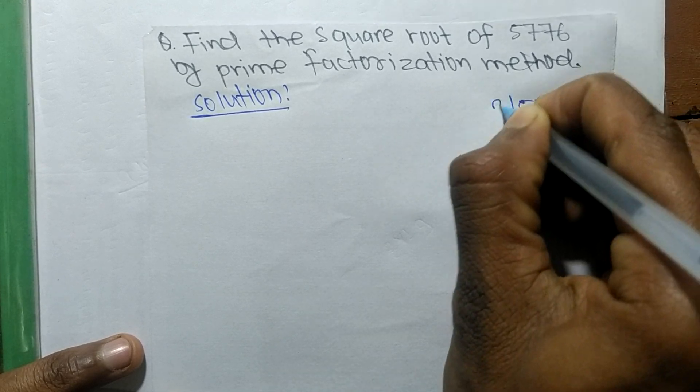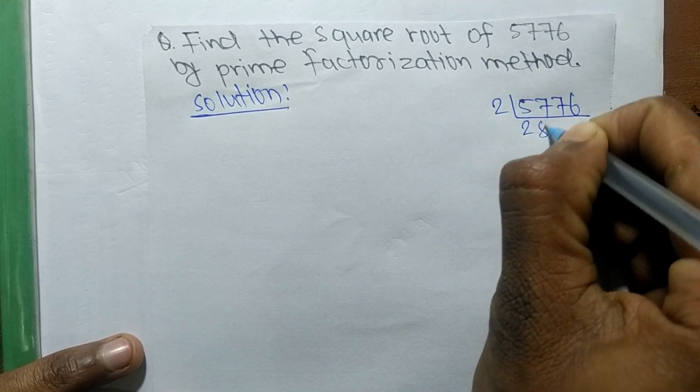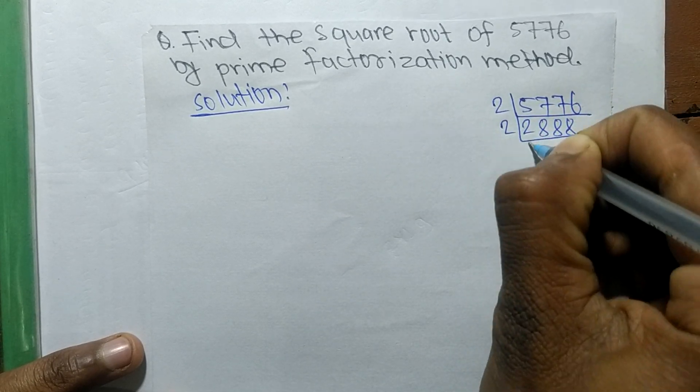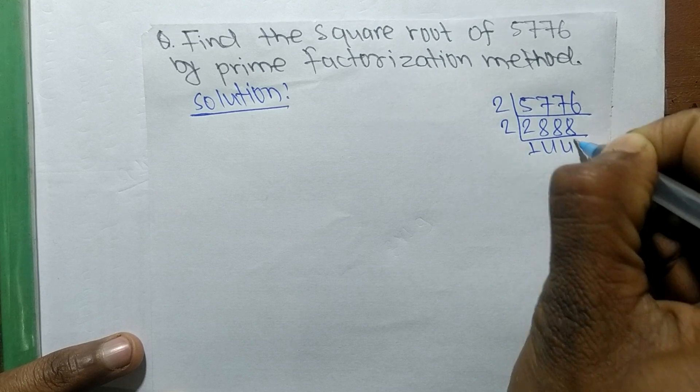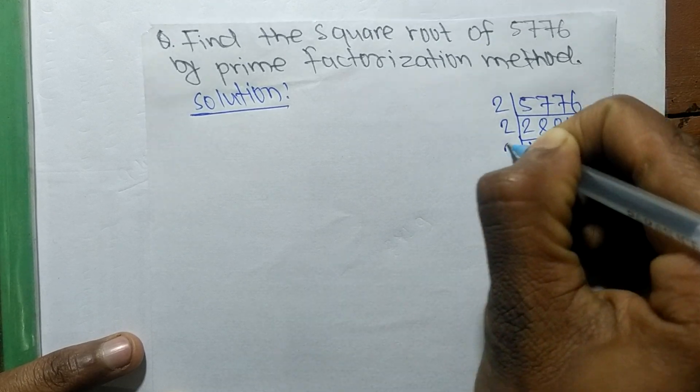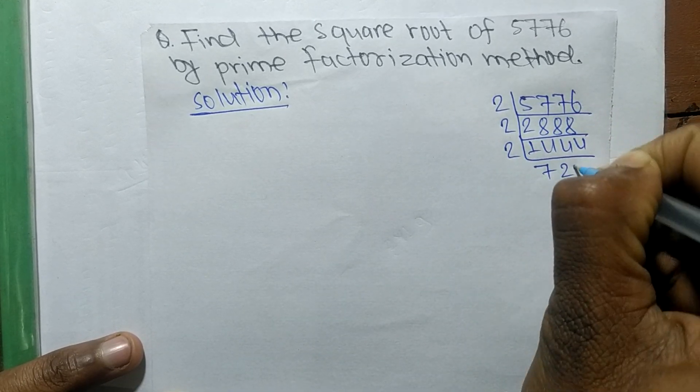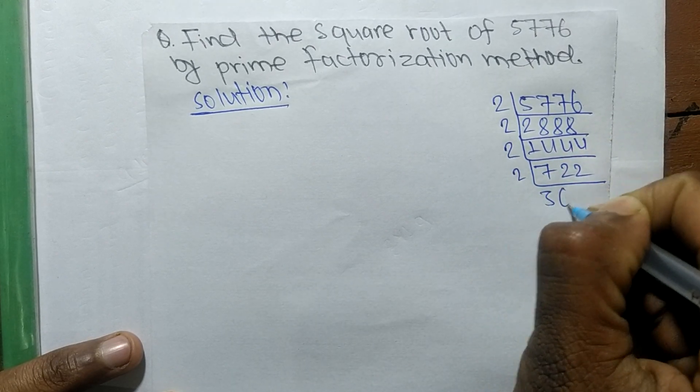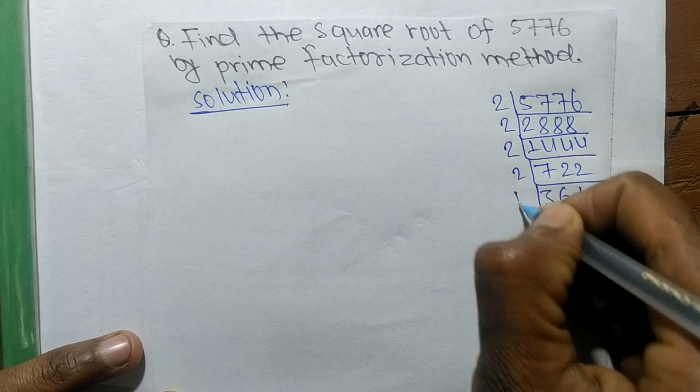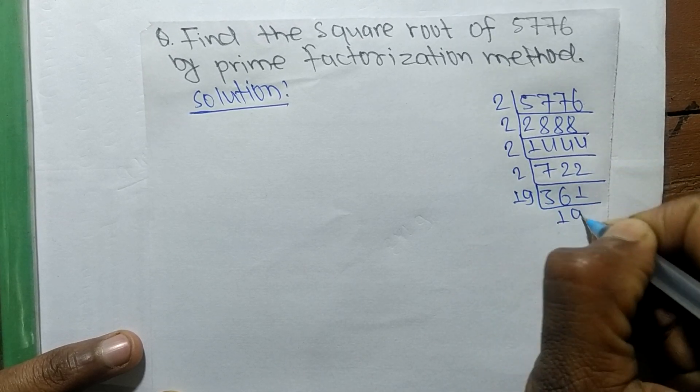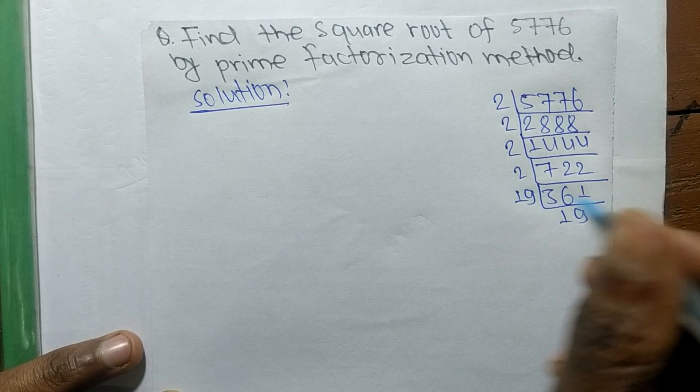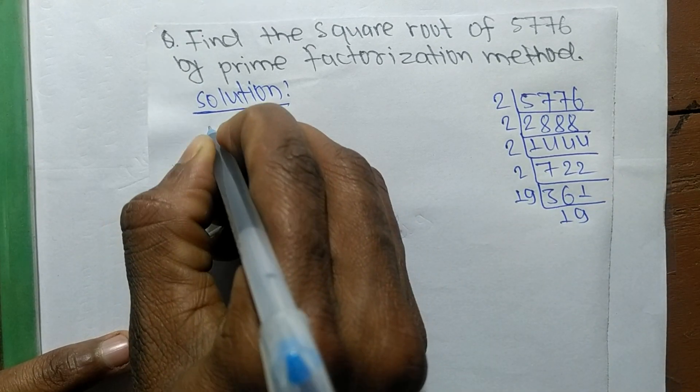So it is 2 times 2888, again 2 times 1444, again 2 times 722, which gives 361. Then it is 19 times 19. So after finding the prime factors, now we have to find the square root.